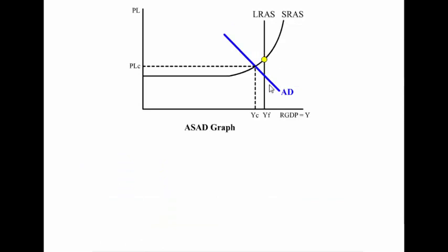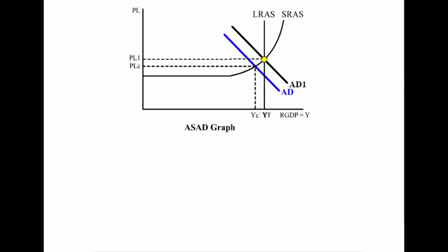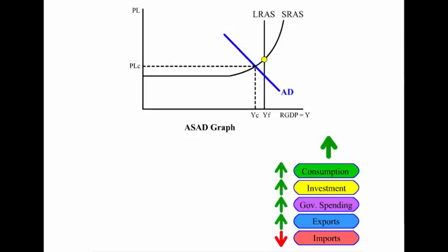If the economy is less than full employment, something should be done to get the economy to the ideal spot, which is at the yellow dot. To get the economy back to full employment, a change can occur in the components of aggregate demand — C, I, G, X minus M. If consumption increases, then this will shift aggregate demand to the right, driving the price level up and the output up until you get to full employment.